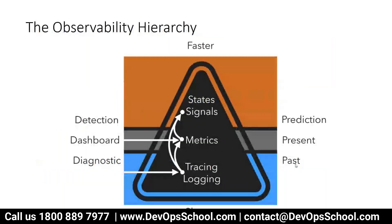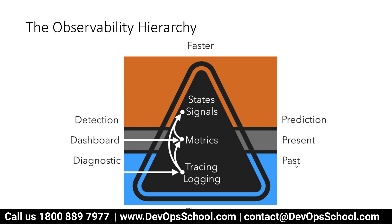How do we implement the observability hierarchy? In order to do observability, you need to gather data from the past — not just metrics, but data. These are different types of data we gather. Tracing and logging give you data about what has happened in the past, metrics give you the present state, and then based on tracing, logging, and metrics you predict the future through stats and signals. The data diagnosed from the past and presented on a dashboard is used for further detection.